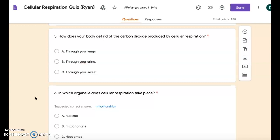Number five: How does your body get rid of the carbon dioxide produced by cellular respiration? A: through your lungs. B: through your urine. C: through your sweat.